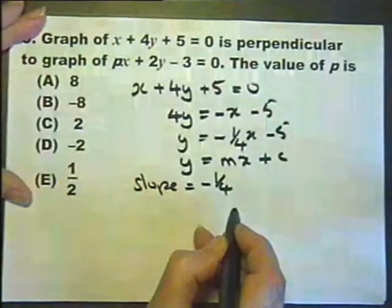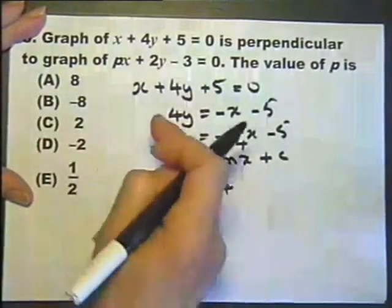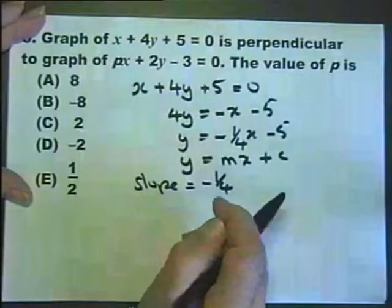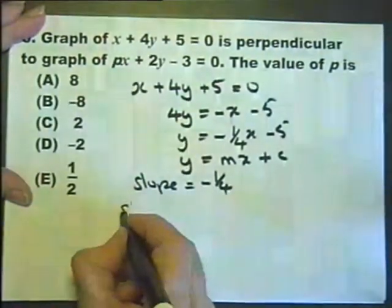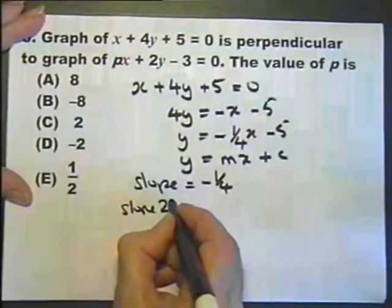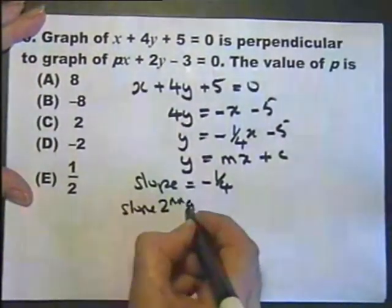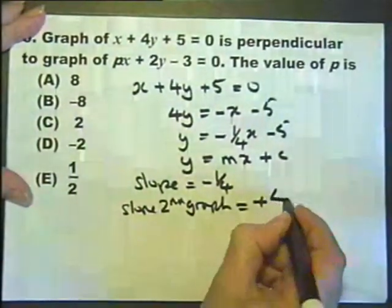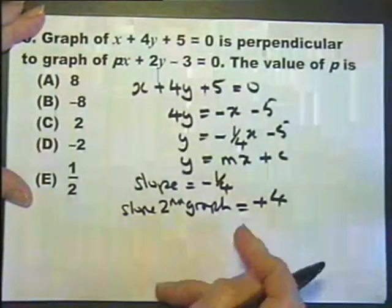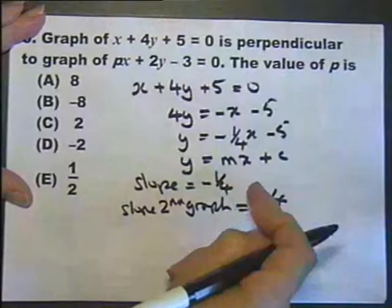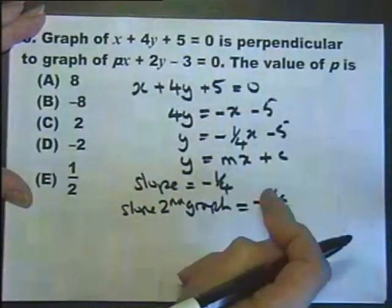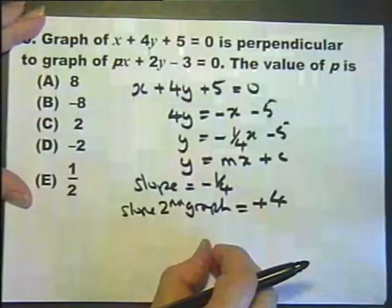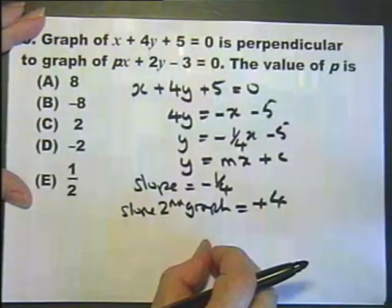So therefore, if this other graph is going to be at right angles — perpendicular — then the slope of the second graph has to be plus 4, because when you multiply these two together you get minus 1. And if you multiply two gradients or slopes together and get minus 1, they must be perpendicular.